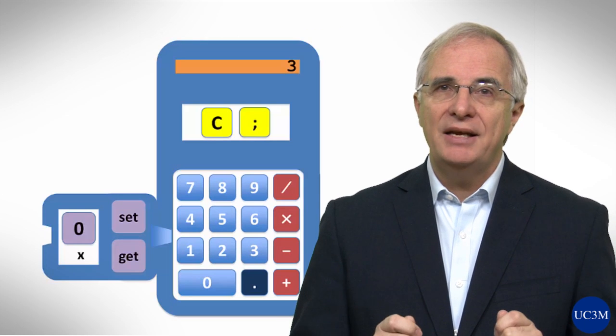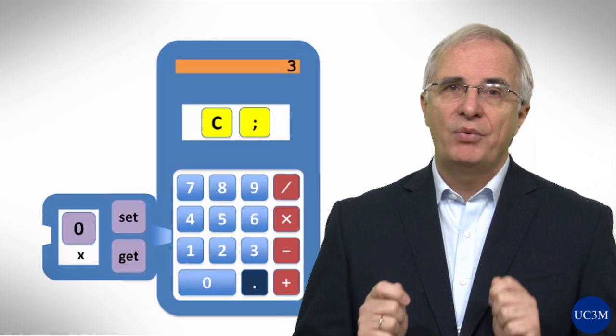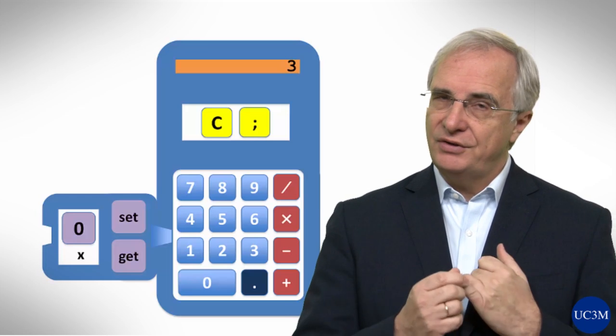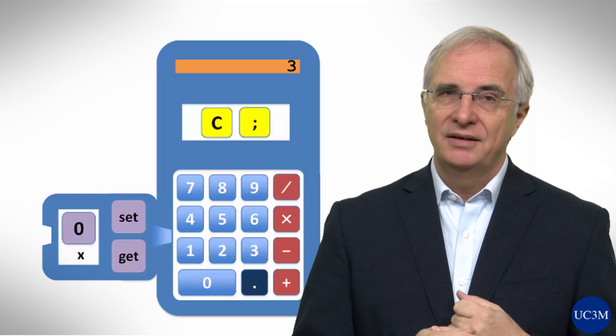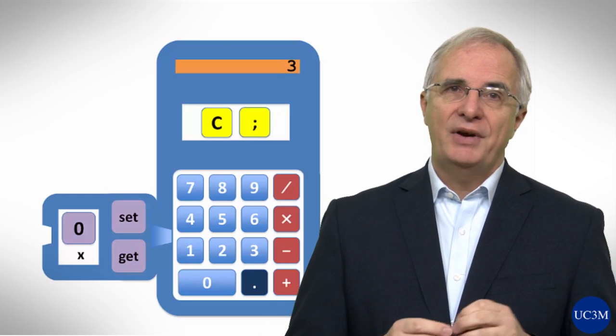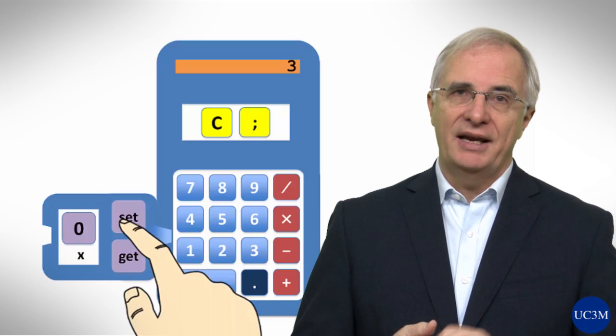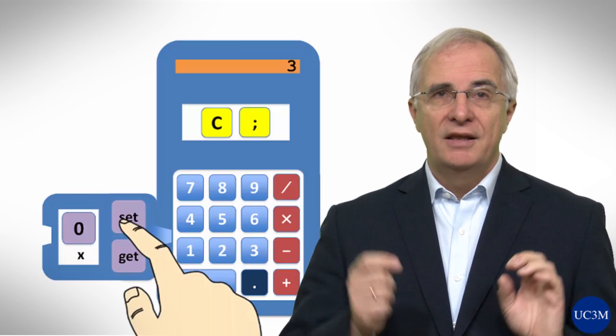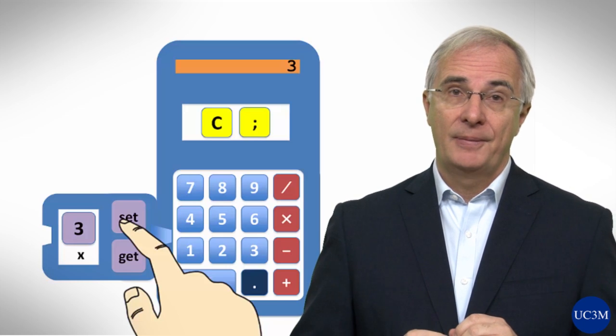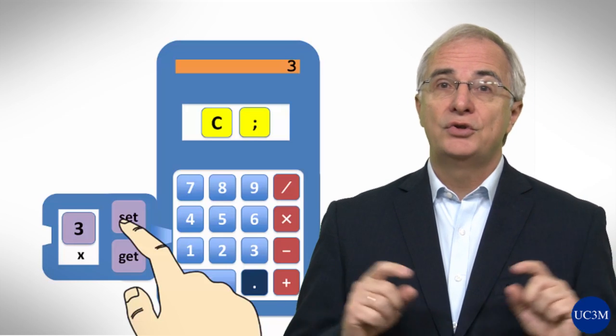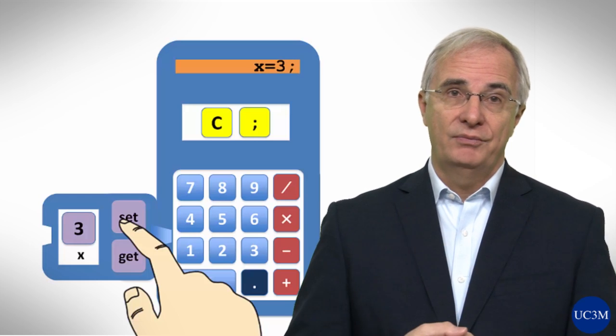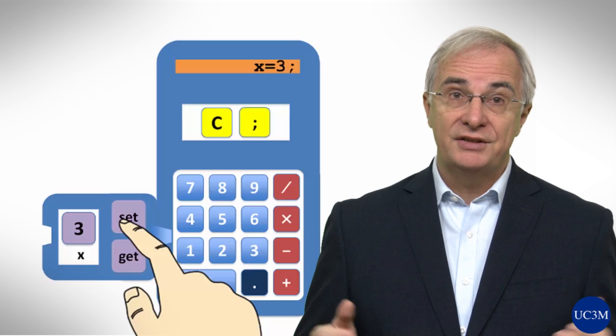Now we want the display to show something when we press the set or get key. Let's first talk about set. Imagine that we have a 3 on the display and that we press the set key of variable x. The value 3 would be then stored in variable x. And the display could show something like x equal 3 semicolon in order to record what we just did.